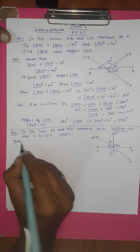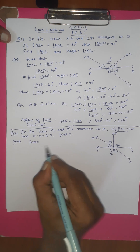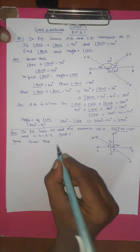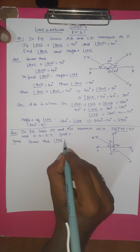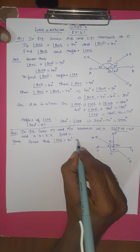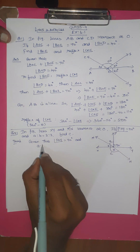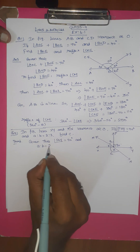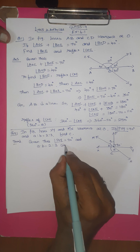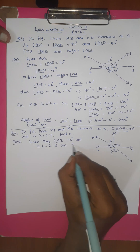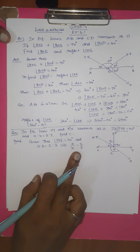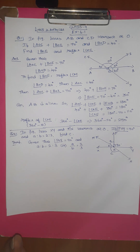Proof — given that angle POY is 90 degrees and A to B ratio equals 2 to 3, meaning A by B equals 2 by 3. This is correct.